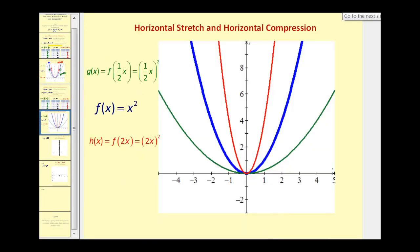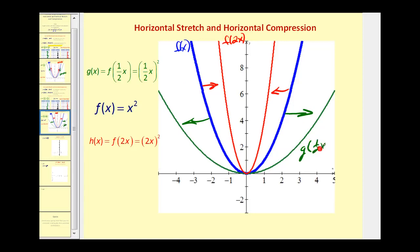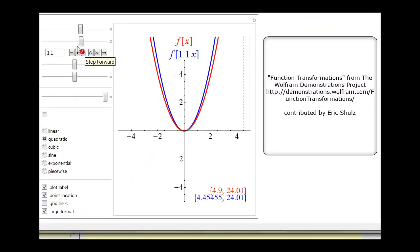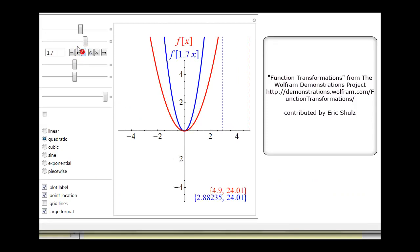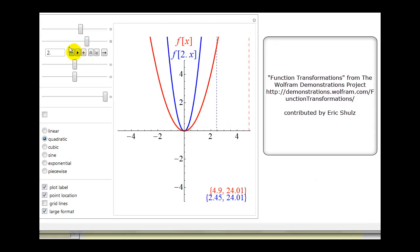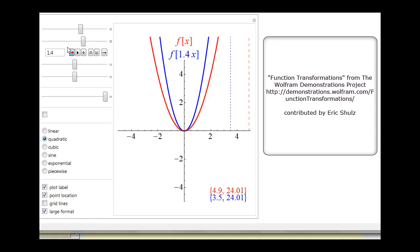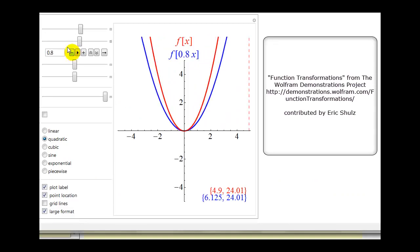Looking at these three graphs, the original function is again in blue. When b equals two, we have a horizontal compression, squeezing it to obtain the red function f of two x. When b equals one half, stretching the blue function horizontally gives the green function. In the animation, when b is greater than one we see horizontal compression, and when b is between zero and one we see a horizontal stretch.